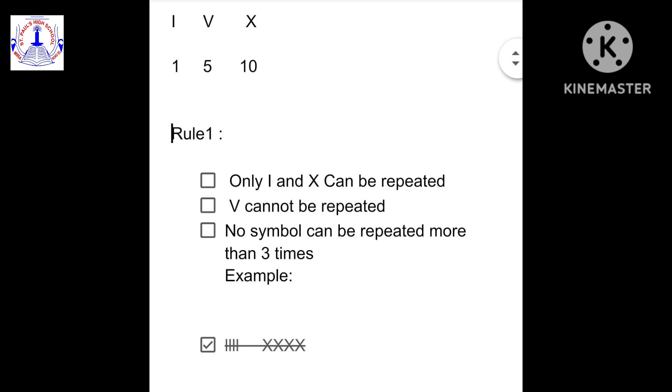So, children, there are some rules of Roman numerals. Rule 1 says, only I and X can be repeated. V cannot be repeated. No symbol can be repeated more than 3 times.